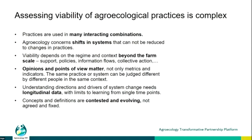Opinions and points of view matter — it's not only about net metrics and indicators. When you look at cost-benefit analysis, farmers reach conclusions that are often based on their own values: two neighboring farmers experiencing exactly the same metrics can come to completely different conclusions about viability. Understanding directions, drivers, and system change also requires longitudinal data — there are limits to what single time points can reveal. All the concepts and definitions we use, starting with what we mean by agroecology, are contested and evolving, and the project aims to advance our understanding of these.